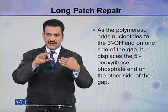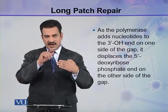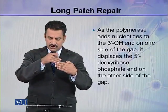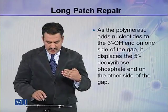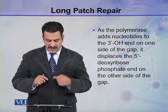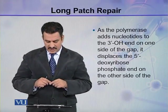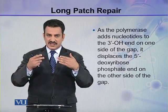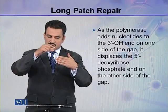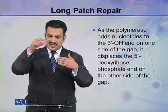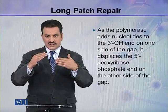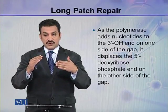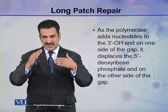on this side is the 3'-hydroxyl group, and the polymerase adds nucleotides to this side. It displaces the 5' deoxyribose phosphate on the other side of the gap. As new nucleotides are introduced on this side, the 5' deoxyribose phosphate is slightly displaced.